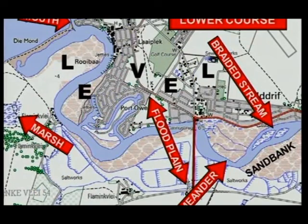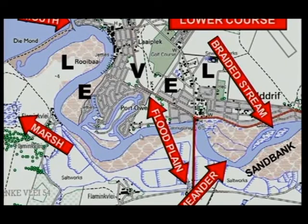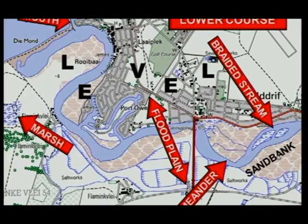Have a look at the lower course on the topographic map. The first thing you notice is that there are no contours — this means the whole area is level, right across the map. You can see the mouth of the river and the sea. There are marshes, a broad floodplain, and the river is even broader here compared to the previous courses. We've got huge meanders and even braided streams. There are sandbanks — why? Because the river is flowing so slowly that sand is being deposited. You must be in a position to identify your upper, middle, and lower course on your topographic map.